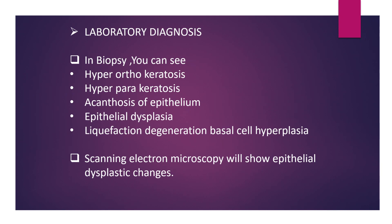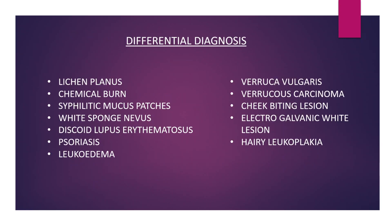In laboratory diagnosis, biopsy may show hyperorthokeratosis, hyperparakeratosis, acanthosis of epithelium, epithelial dysplasia, liquefaction degeneration, and basal cell hyperplasia. Scanning electron microscopy will show epithelial dysplastic changes. Differential diagnosis includes lichen planus, chemical burn, syphilitic mucous patches, white sponge nevus, discoid lupus erythematosus, psoriasis, leukoedema, verruca vulgaris, verruca carcinoma, cheek biting lesion, electrogalvanic white lesion, and hairy leukoplakia.